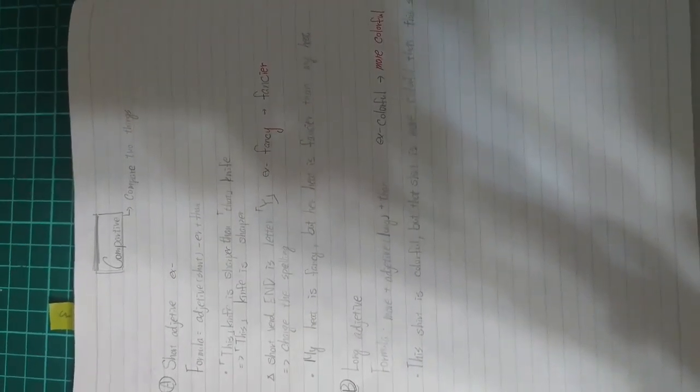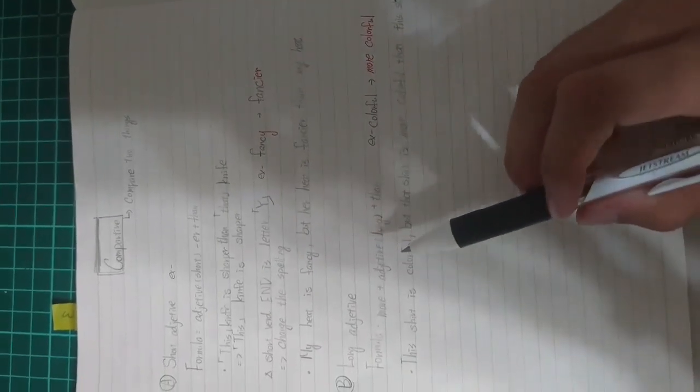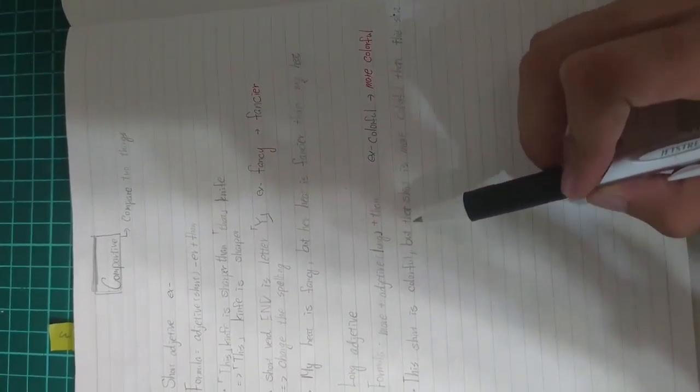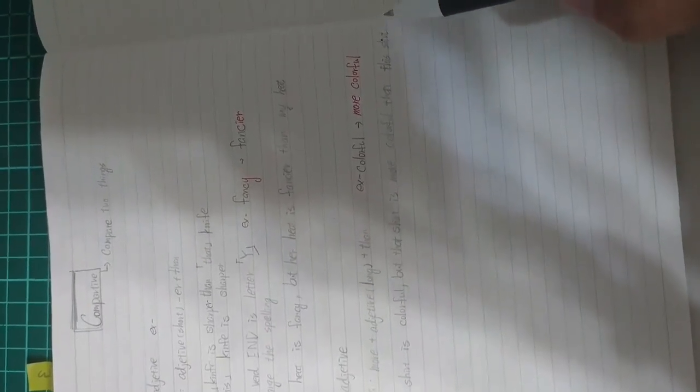If the adjective is the long one, the formula we use is more plus adjective plus than. For example, this shirt is colorful, but that shirt is more colorful than this shirt.